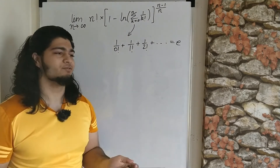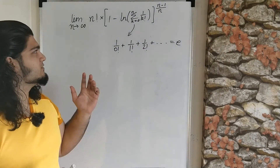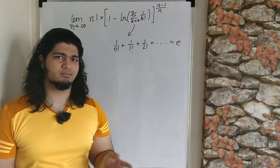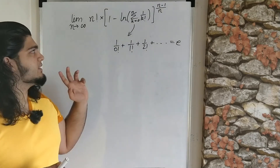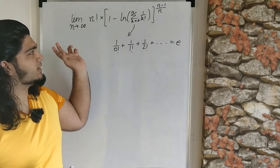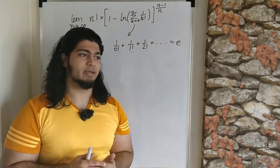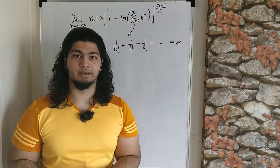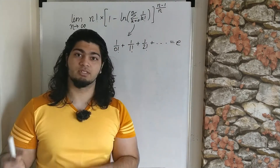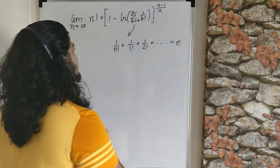With a discrete limit like this we only have two choices: firstly we can use the sandwich theorem, and the other option is that we can manipulate this entire expression into something else that may be easier to evaluate. The second option is what we are going to do.